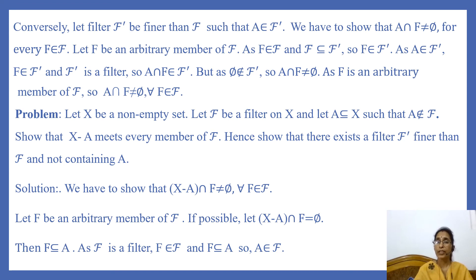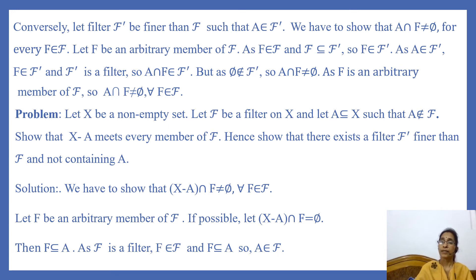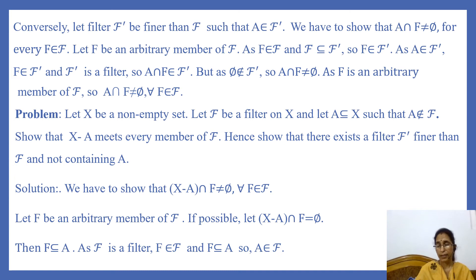Conversely, let F dash be a filter on X finer than F such that A belongs to F dash. Then we have to show that A intersects every member of filter F. Take an arbitrary member F of filter F. Since F dash is finer than filter F, F also belongs to F dash. As A belongs to F dash and F belongs to F dash, and since F dash is a filter, the intersection of A and F also belongs to F dash. As the empty set doesn't belong to F dash, A intersection F is non-empty for every F in filter F.